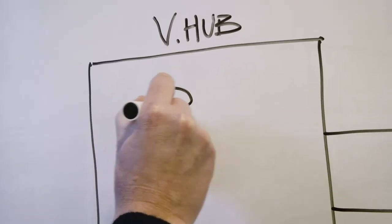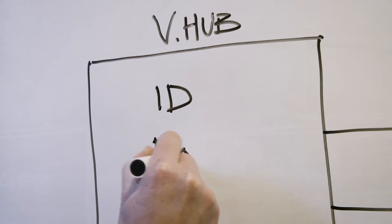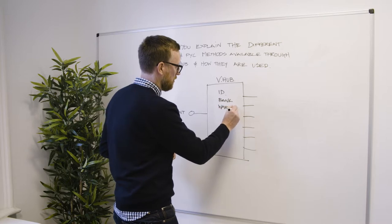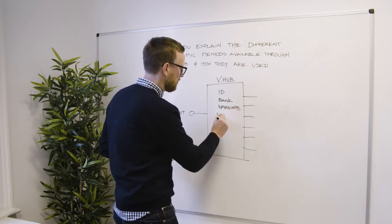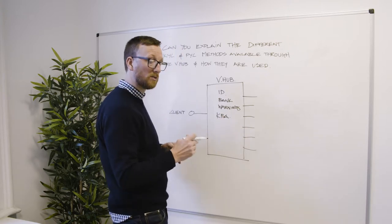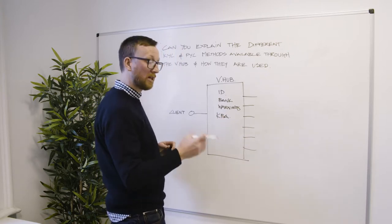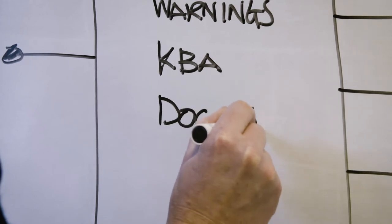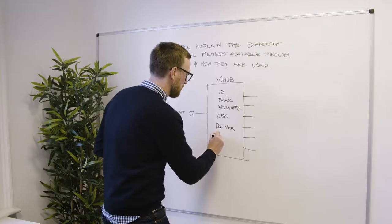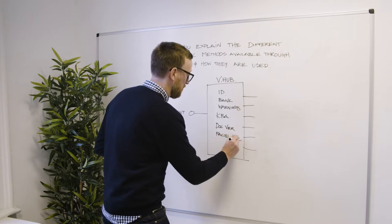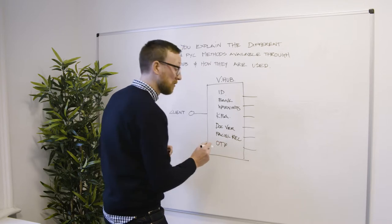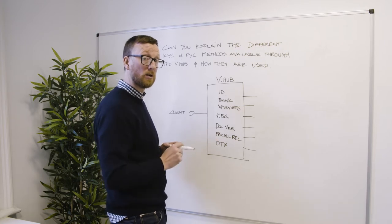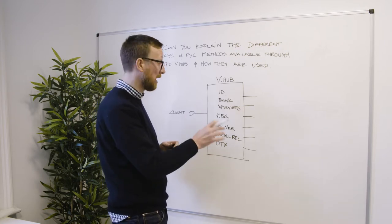We've got ID checks, bank checks, warnings, knowledge-based authentication—which is a series of questions and answers that a customer would need to get correct to prove their identity—document verification, facial recognition, and one-time passcode. So that's sending an SMS to a customer's mobile phone. The customer needs to enter that code from the SMS into a workflow before being allowed to proceed.